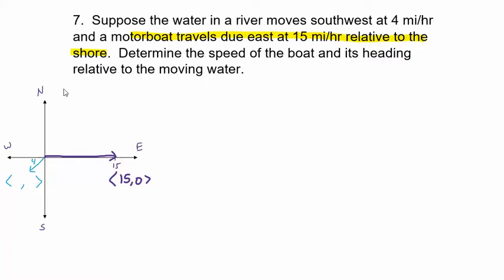I'm going to take the water vector with magnitude 4 and move it — translating it up, keeping it parallel with the same magnitude and direction. With a magnitude of 4, what we want to find out is the speed of the boat relative to the moving water. In other words, how is the boat directed in the water? That heading vector would have to point this way, so that when affected by the current, its actual path is the purple one.